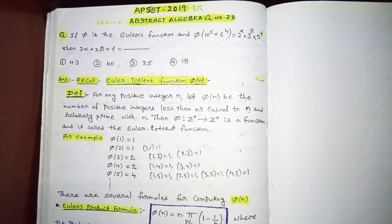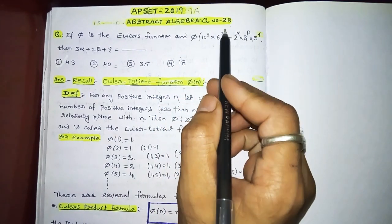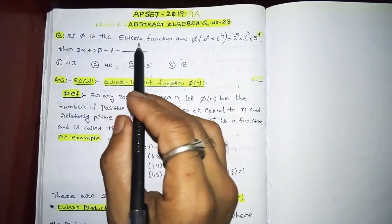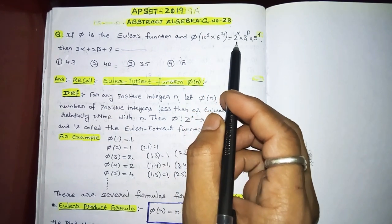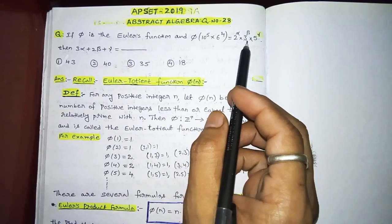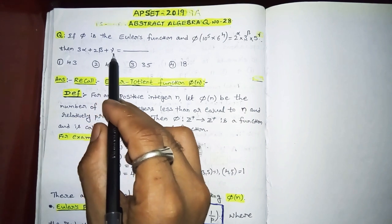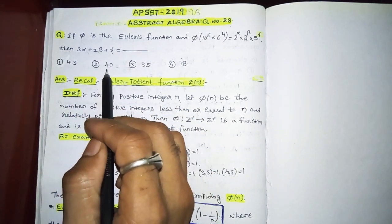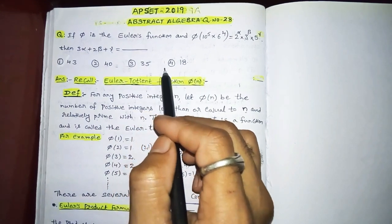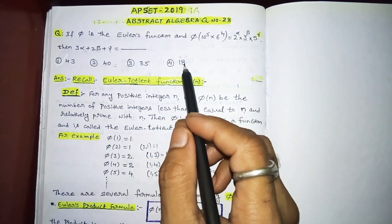Hi everyone, this is Ramakrishna, welcome to my channel. In this video I'm going to discuss a 2019 abstract algebra question number 28. The question is: if φ is the Euler's function and φ(10^5 × 6^4) = 2^α × 3^β × 5^γ, then 3α + 2β + γ equals? The four options are: option 1: 143, option 2: 240, option 3: 35, option 4: 18.